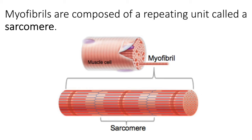Let's look more closely at a myofibril. Each myofibril is surrounded intimately by the sarcoplasmic reticulum. When we look at the myofibril itself, we can see it's made up of a repeating unit. We see a thick red line down the middle, blue zigzags on either side, and thick red fibers and thinner blue fibers that overlap.